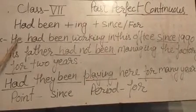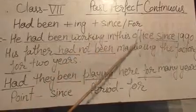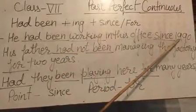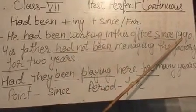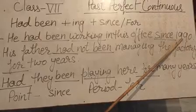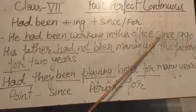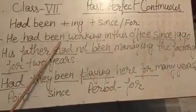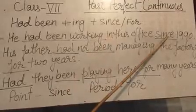Example number 1: He had been working in this office since 1990. Here, 1990 is a point of time, that is why we use since. Had been working — since.